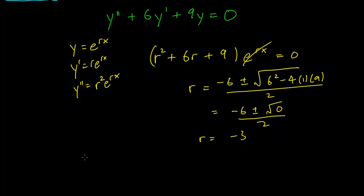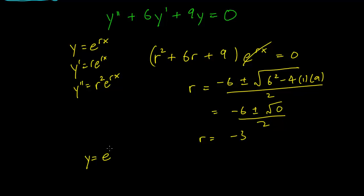But not all is lost. We have one solution. y equals e to the minus 3x is one solution. It's y1. And you can check that that is true.